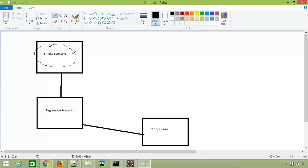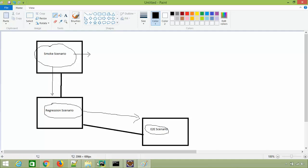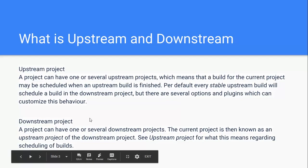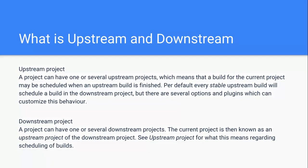The smoke scenario job will be the upstream project for regression, because regression is dependent on the smoke. And regression scenario will be the downstream for the smoke scenario - up and down. Similarly, for end-to-end scenario, regression scenario is the upstream project, and for regression scenario, end-to-end scenario is the downstream project. In simple terms, upstream project is like a parent.